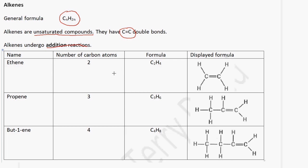The first member of this series has two carbon atoms because we need to have a double bond. The formula will be C2H4. If we use the general formula, it will be 2 multiplied by 2, which is 4. We draw two carbon atoms with a double bond, and we end up with this displayed formula.